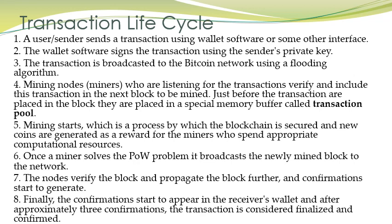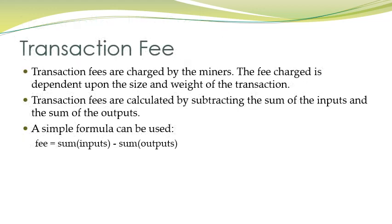As studied in the previous session, transaction fees are charged by the miners. Miners get a reward — they get coins for transaction verification because miners spend computational resources for verifying transactions. Fees are calculated by subtracting the sum of outputs from the sum of inputs. A simple formula can be used: Fees = Sum of Inputs minus Sum of Outputs.